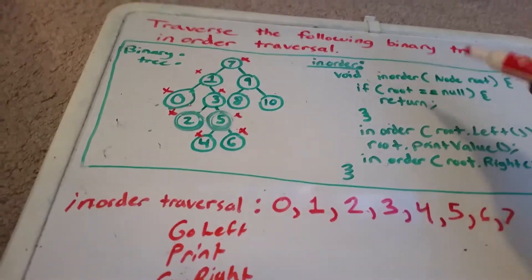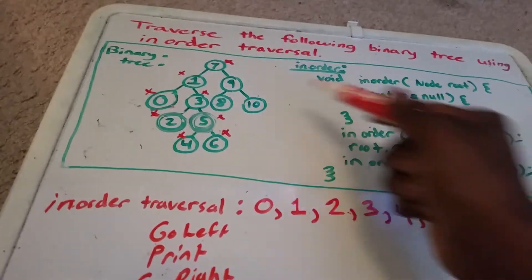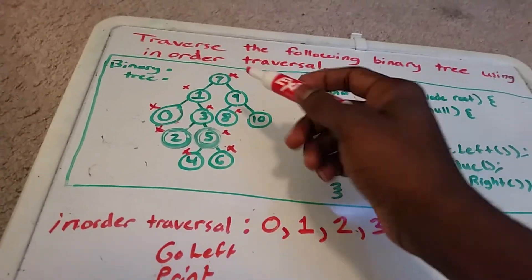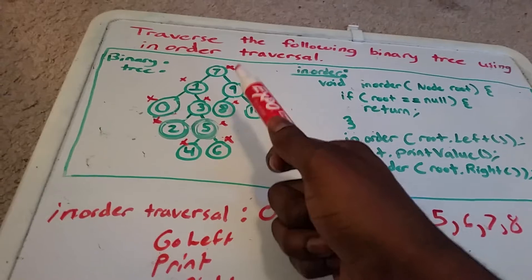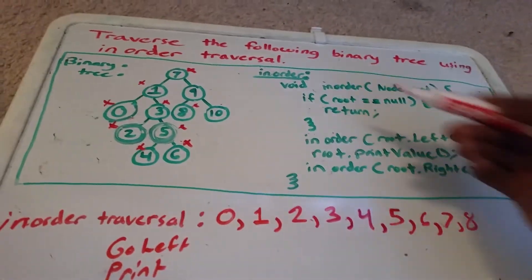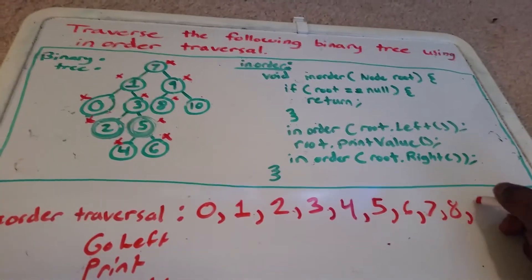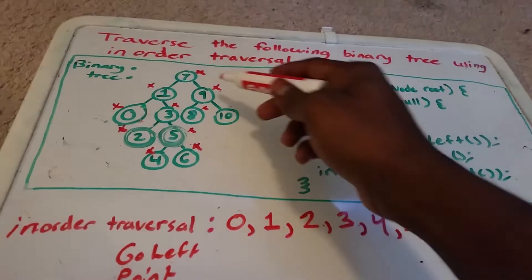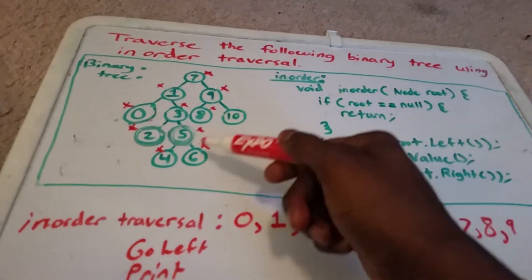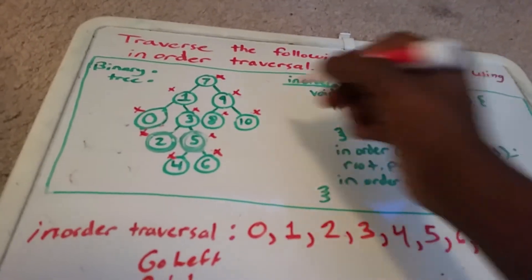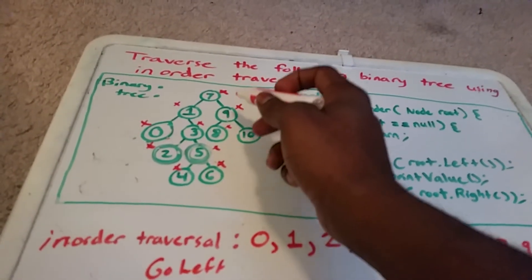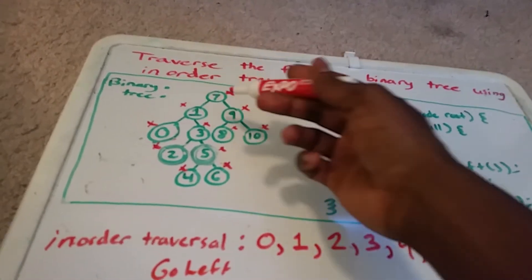We go right and have 9. We go to the left of 9 and get 8. We go to the left of 8 — nothing — so we return back to 8 and print 8. We go to the right of 8 — nothing — so we return from 8 and go to 9. Now we're at 9, so we print it. Then we go as far right on 9 as possible and get to 10. We go to the left of 10 — nothing — so we return back to 10 and print 10. We go to the right of 10 — nothing — so we return back to 9, then back to 7, and we are done.